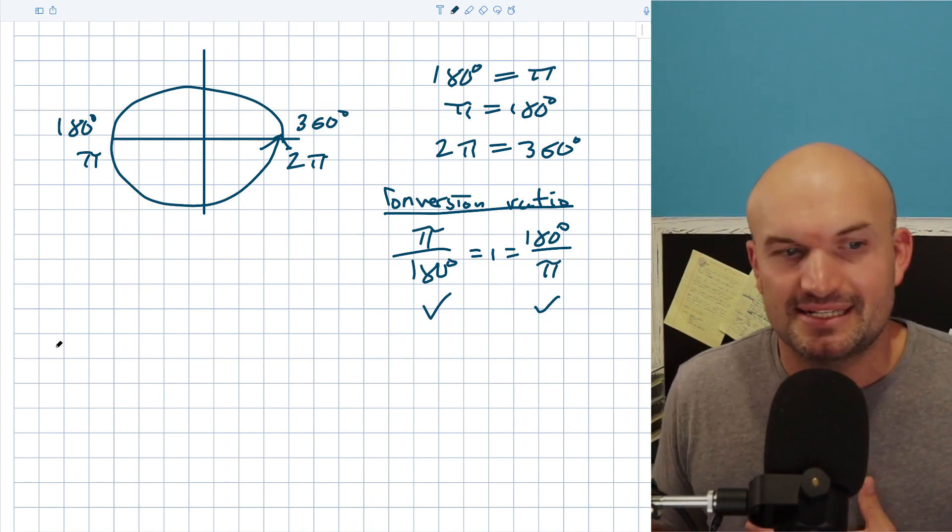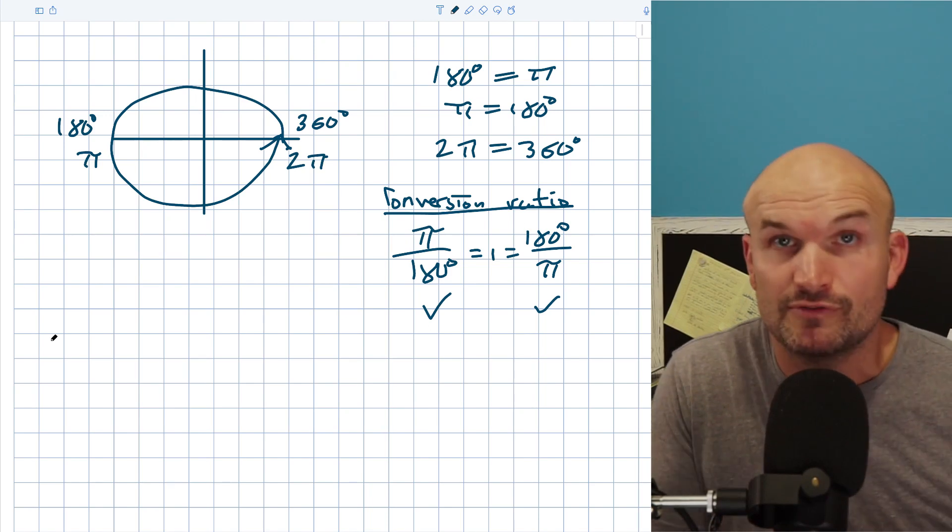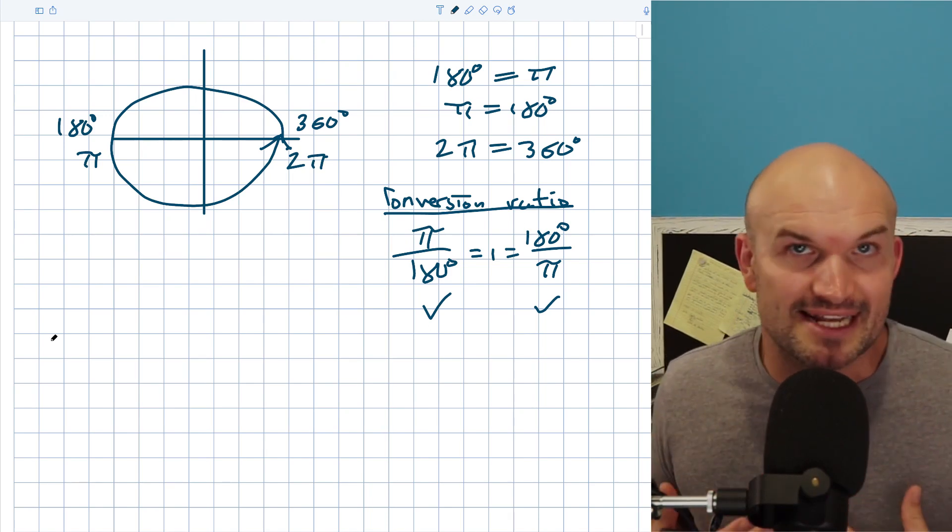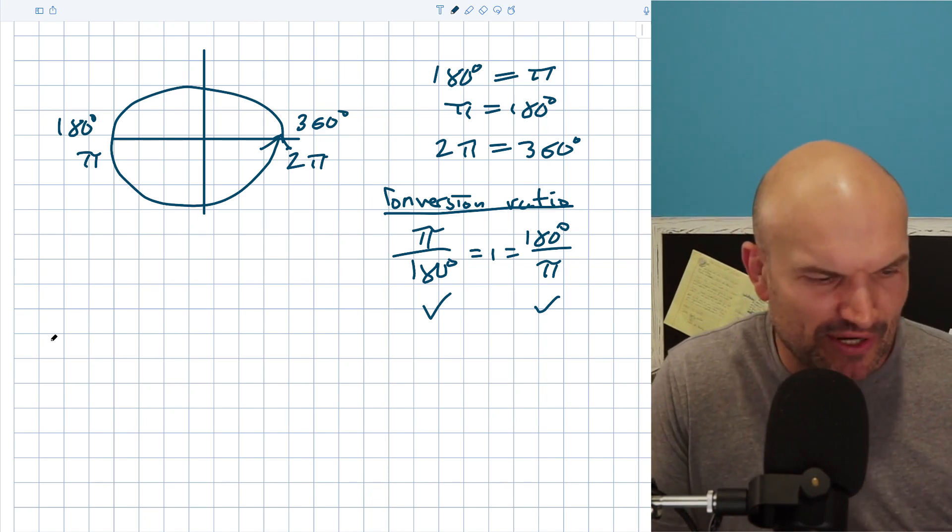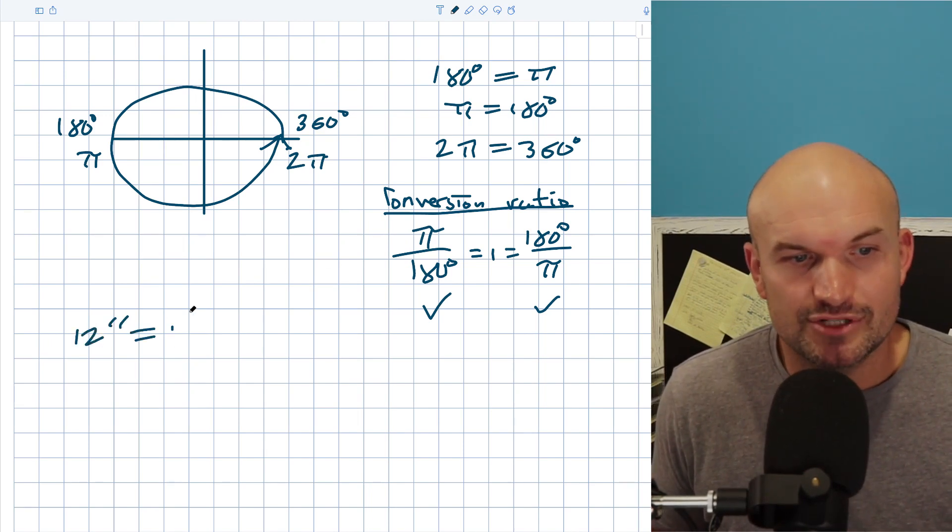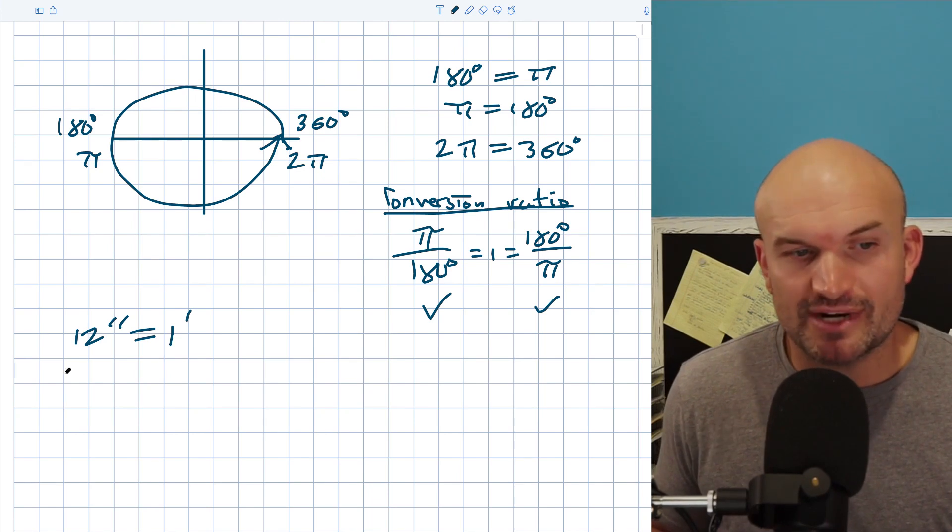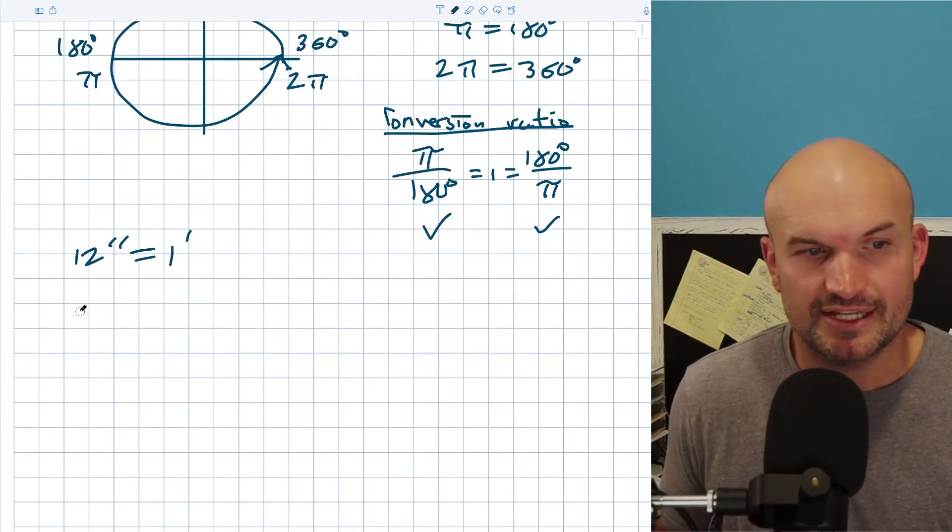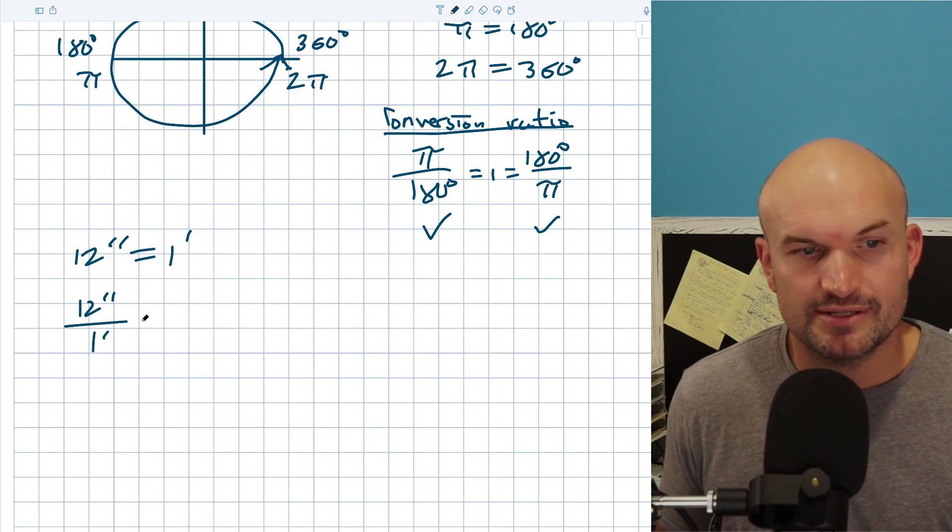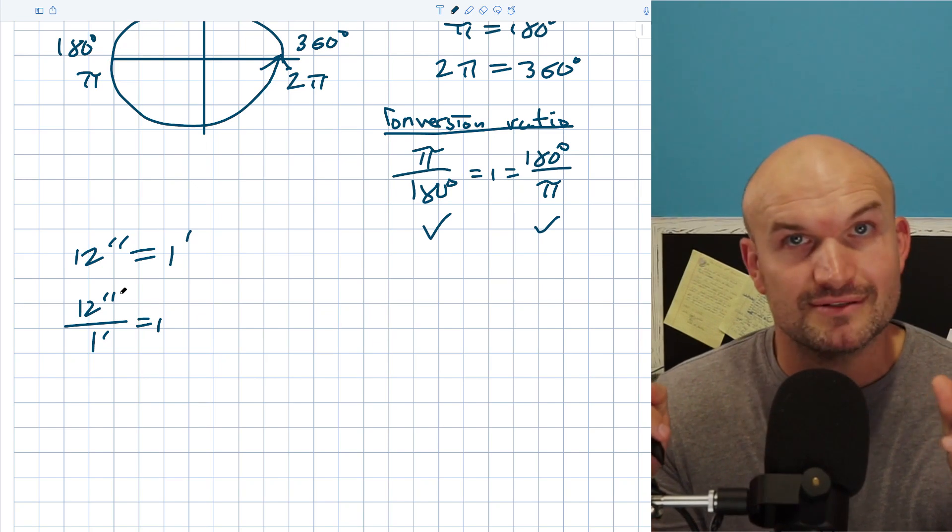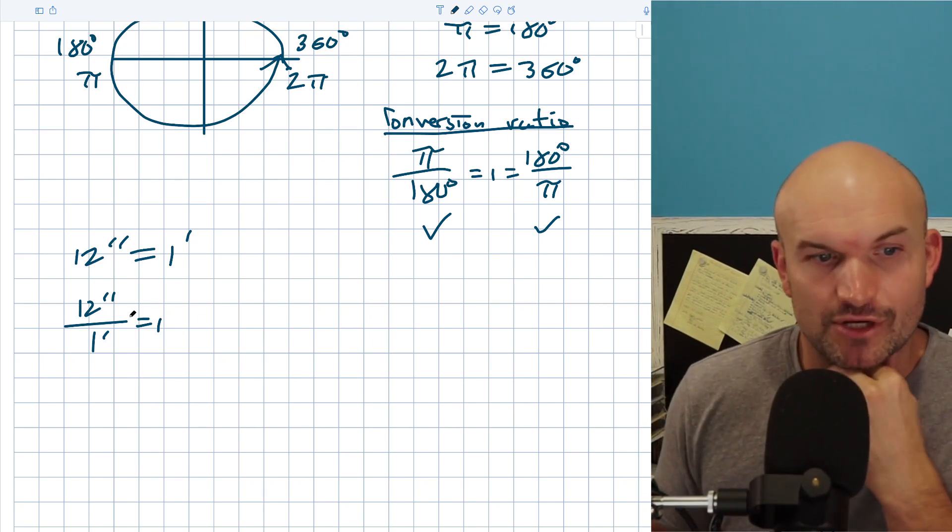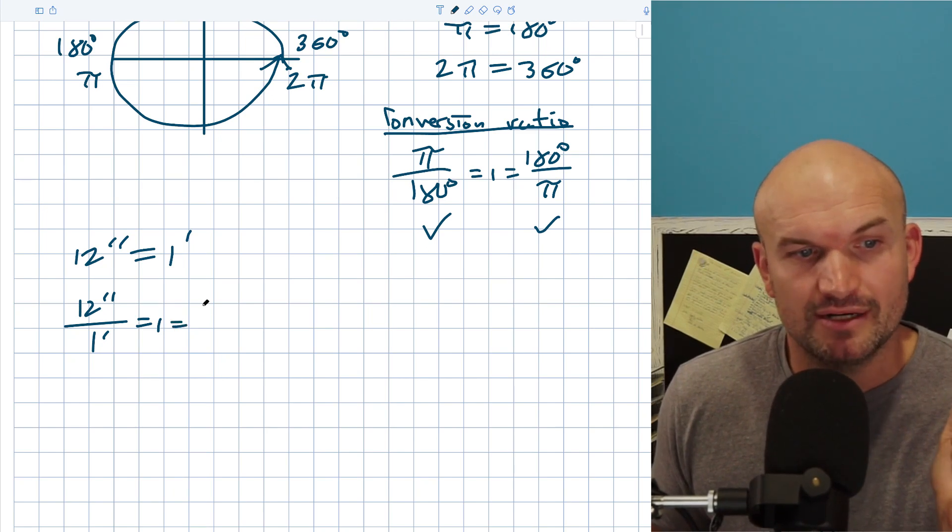The most basic example that I can relate to students is another conversion ratio that at least me based in the United States can relate to is with feet and inches. Because I think it's always weird, there's 12 inches. Why is it 12 inches in one foot? But there are, 12 inches is equal to one foot. Our conversion ratios for measurement for inches and feet is 12 inches is to one foot, which is equal to one. Those are the same measurements. If you take like a ruler, there's 12 inches in one foot. And one foot is equal to 12 inches.